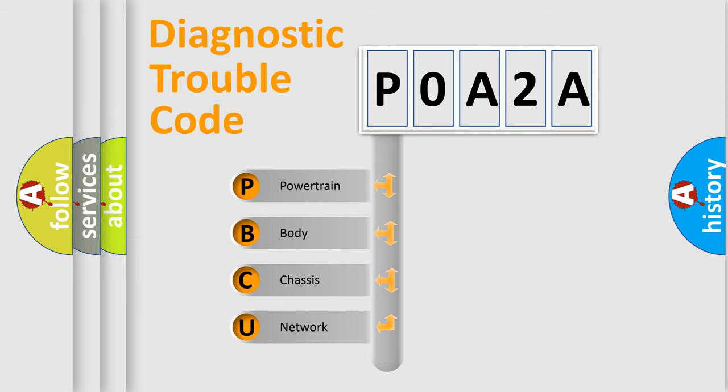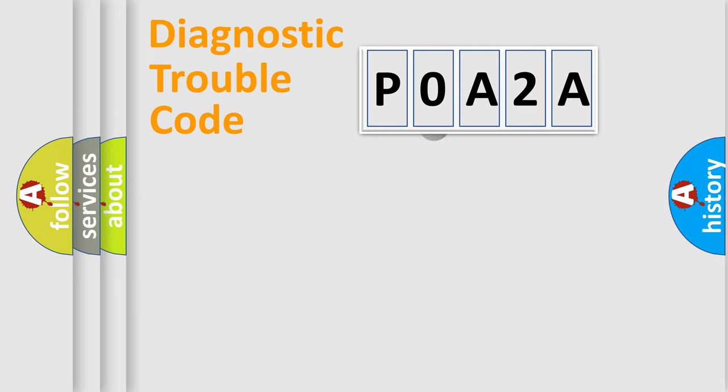We divide the electric system of automobile into four basic units: Powertrain, Body, Chassis, and Network. This distribution is defined in the first character code.